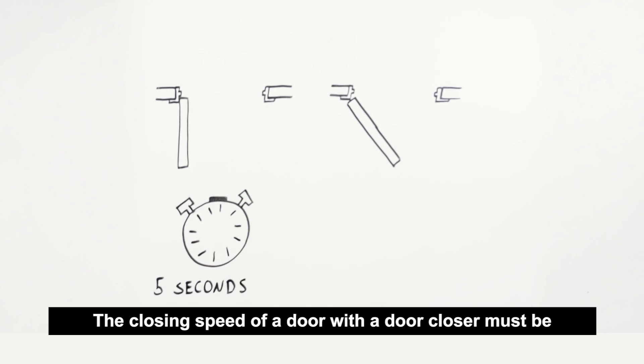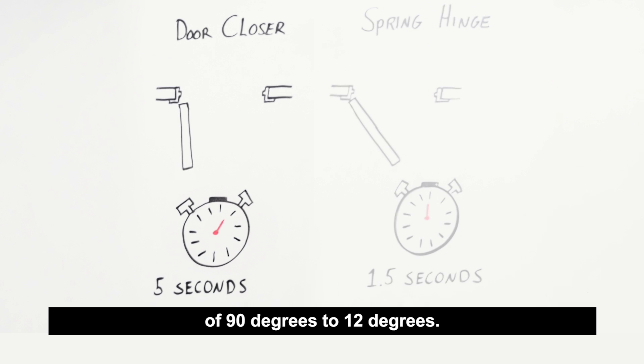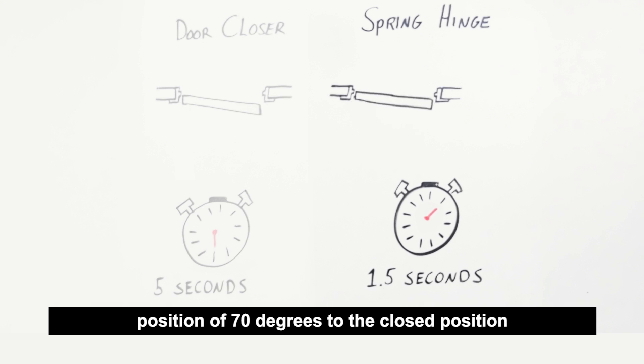The closing speed of a door with a door closer must be a minimum of five seconds, to close from a position of 90 degrees to 12 degrees. For doors with spring hinges, the door must move from a position of 70 degrees to the closed position in 1.5 seconds minimum.